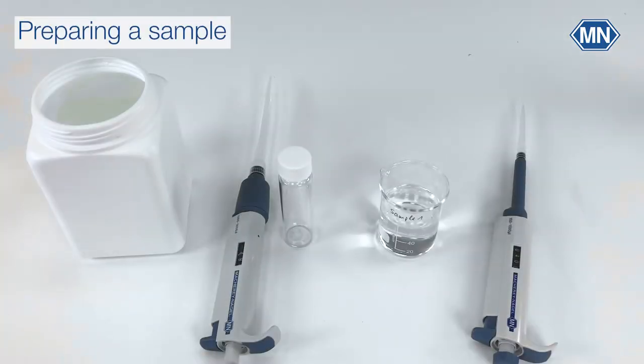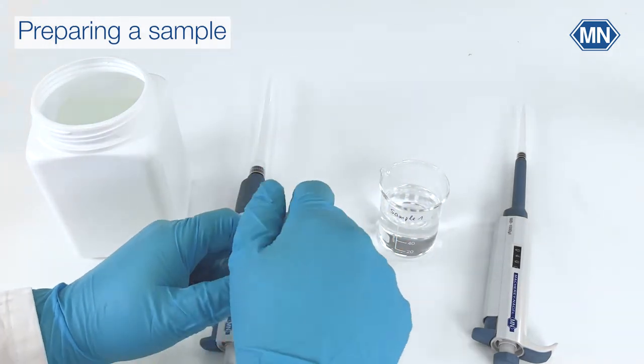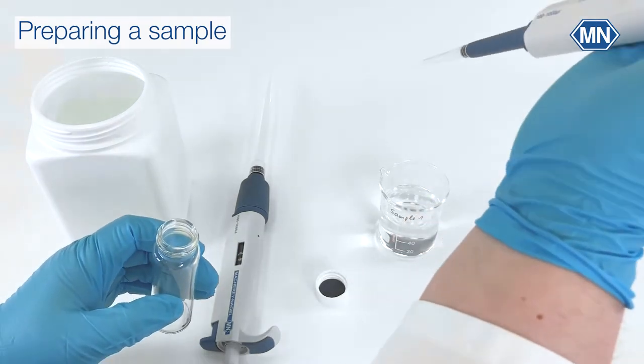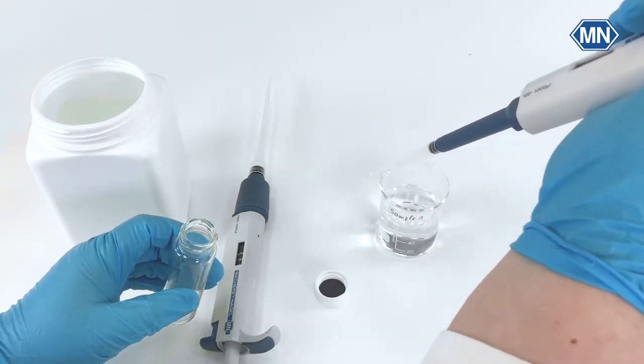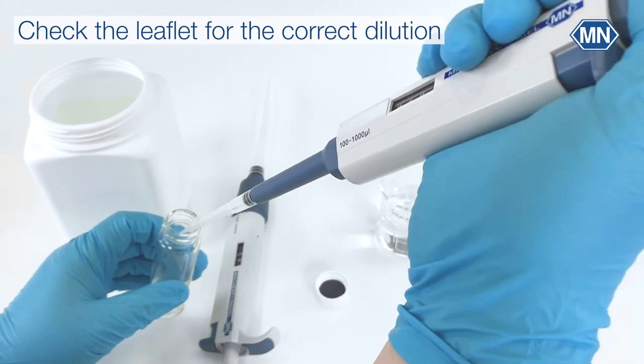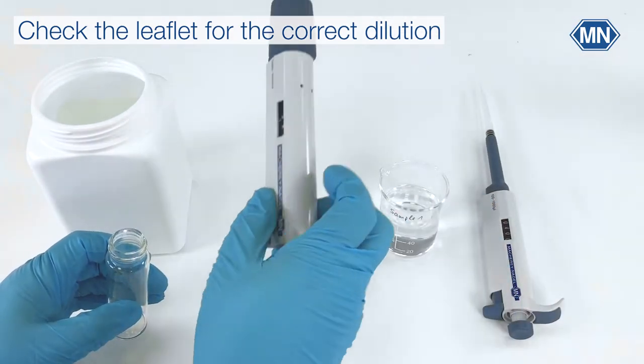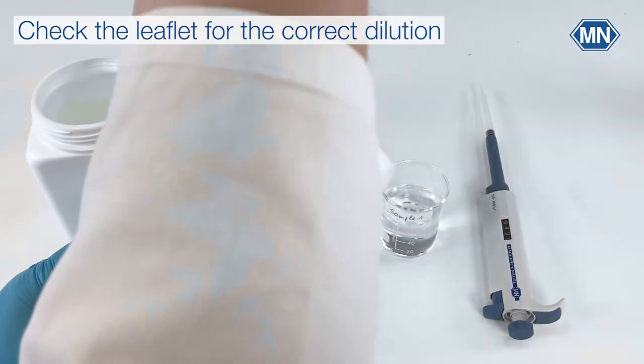According to the expected BOD value prepare a dilution of your sample and the diluting water directly in the reaction vessel. For the correct dilution please refer to the table in the leaflet of the test kit. Check for the most suitable dilution and read the volume of sample and diluting water.